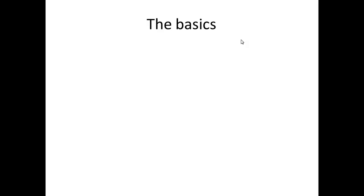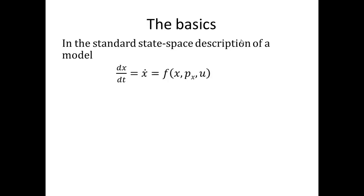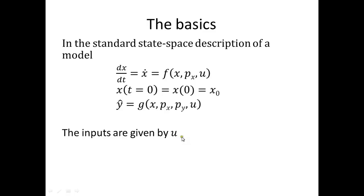Let's look at some basic concepts and definitions. We start with the standard state-space description of the model, which contains three types of equations: the first is the differential equations, the ODEs; the second are the initial conditions; and the third are the measurement equations. Here we have the inputs. They're easy to recognize in this course because we always call them u. In principle you could call them something else, but it's a common thing to call them u, at least in control engineering and system identification literature.